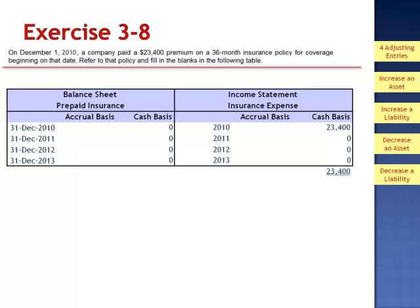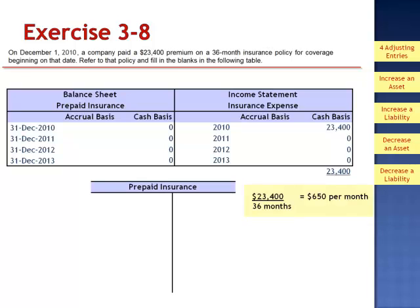So now let's look at the accrual basis. Under the accrual basis, the amount is initially recorded in the asset account, prepaid insurance. We take the $23,400 cost and allocate it evenly among the 36 months of coverage. Our insurance cost is $650 per month. On December 1, 2010, the initial journal entry to record the cash payment is a debit to prepaid insurance and a credit to cash for $23,400.